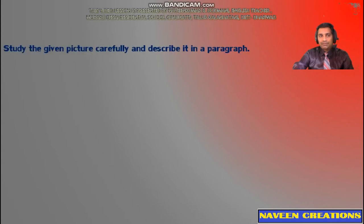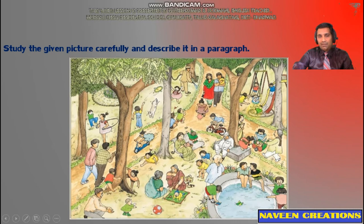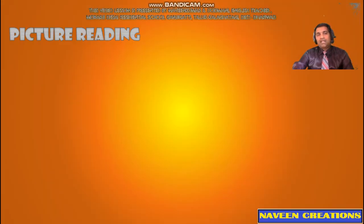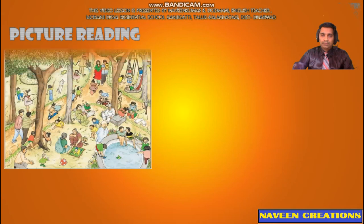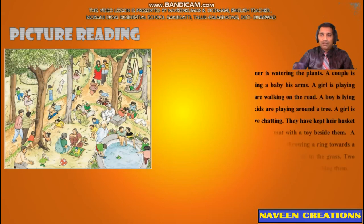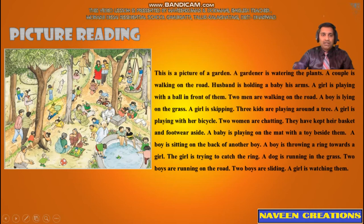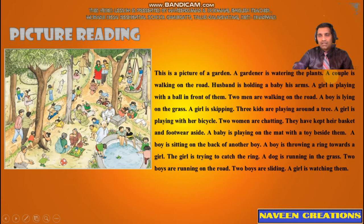Let us take the next picture. Look at this picture carefully and try to describe it in a paragraph. In this picture we can find activities done by many people in the park or garden. This is a picture of a garden. A gardener is watering the plants. A couple is walking on the road. Husband is holding a baby in his arms.